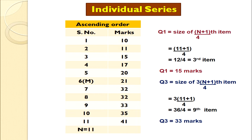For Q3, the formula is the size of the 3(n+1)/4th item. Putting n = 11, we get the 9th item. In the arranged marks, the 9th item is 33. So Q3 = 33 marks. We have now learned how to calculate quartiles in the case of individual series.